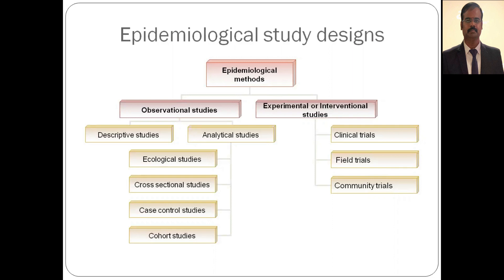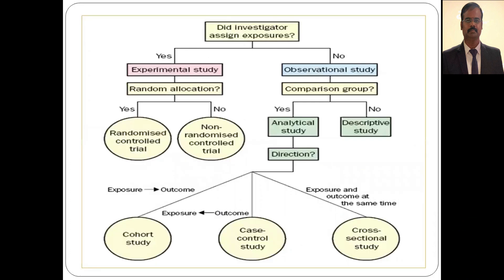This flowchart explains the concepts of all the study designs. Look at the top yellow box: if the investigator assigns the exposure — meaning the investigator intervenes — that is an experimental study. If random allocation is done between an experimental group and a control group, it becomes a randomized controlled trial. If random allocation is not done, it is called a non-randomized trial.